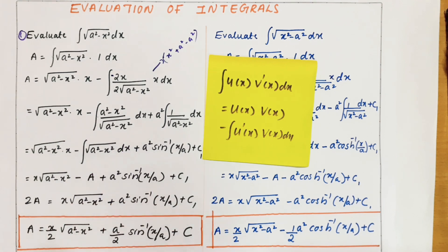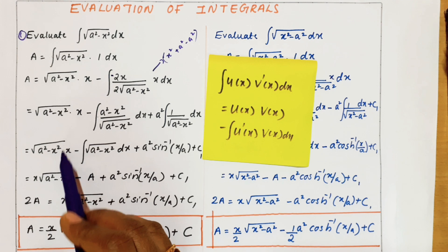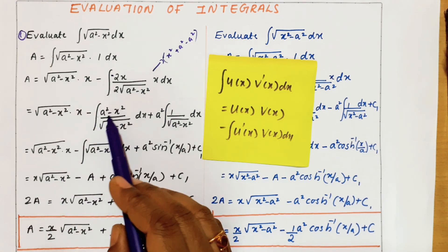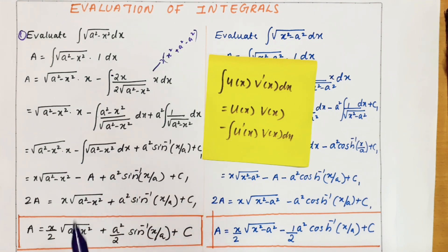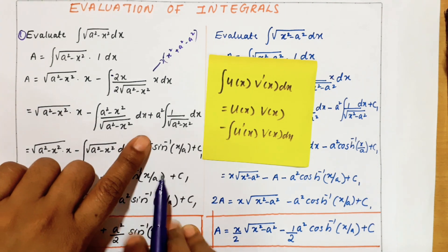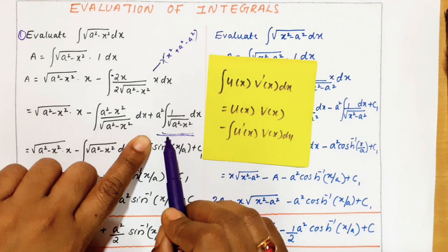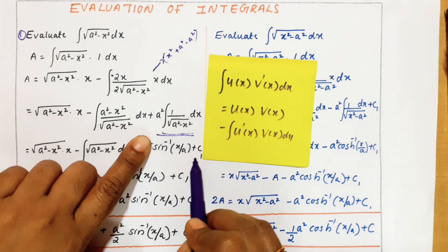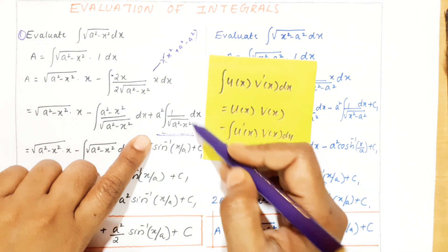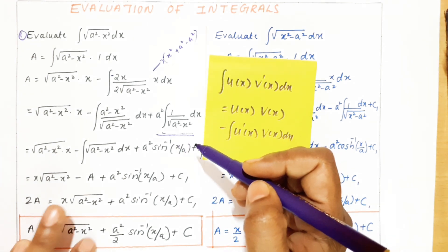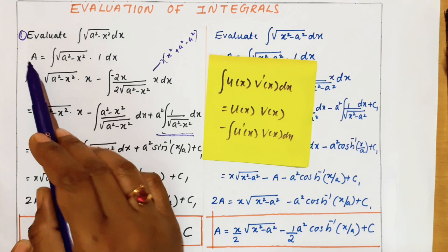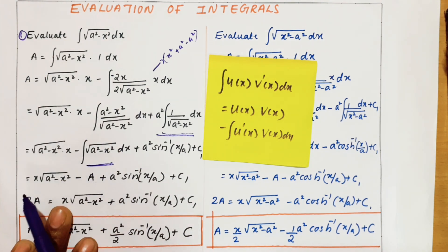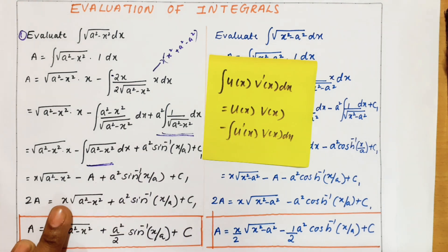Now after getting this form — why we did like that? Because this is in the form of some basic standard integral. First term is √(a² - x²) · x minus. Second term: if you see, the numerator is a² - x² and denominator is √(a² - x²), so we can cancel and get √(a² - x²) dx. This is in the form of the basic standard result: integral of 1/√(a² - x²) dx equals sin⁻¹(x/a) + c. So I can write the third term as sin⁻¹(x/a). Now the second term is nothing but the same question, so I have written it as I, and I am rewriting this also as I. So you see the term x·√(a² - x²) minus I plus a²·sin⁻¹(x/a) + c₁.